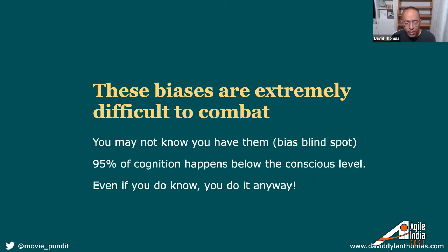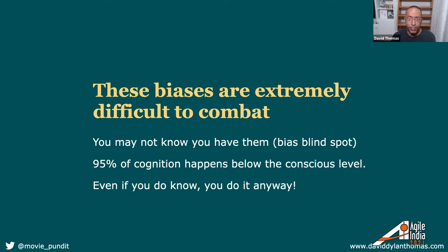There is a bias called anchoring. If I ask everyone to write down the last two digits of their phone number and then bid on a bottle of wine, those who wrote down a lower number are probably going to bid lower, and those who wrote down a higher number are probably going to bid higher. I could tell you all of that before the experiment — you'd probably still do it. In fact, I could offer you cash money not to do it, and you'd probably still do it.